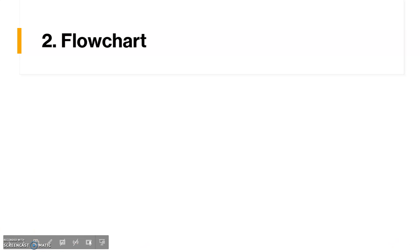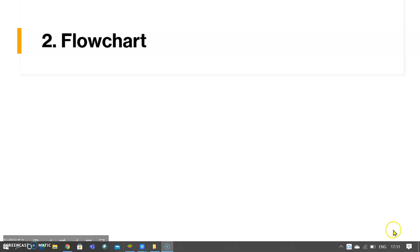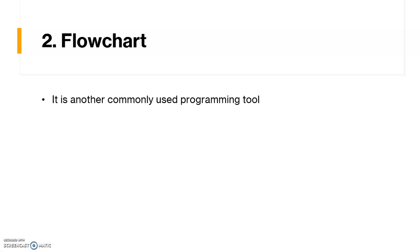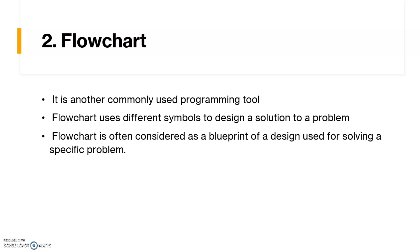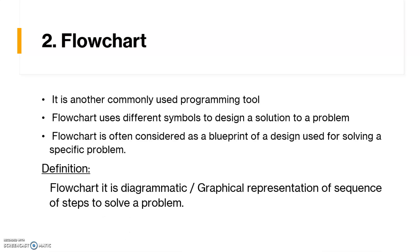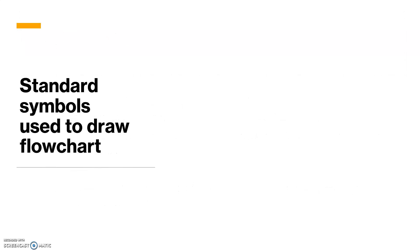We are in the design phase, and as part of the design phase we learned about writing an algorithm, and then we need to continue with the flowchart. Today we will see in detail about the flowchart. An algorithm is nothing but a step-by-step process, whereas a flowchart is a diagrammatic representation — a tool commonly used which uses some symbols to design a solution to a problem.